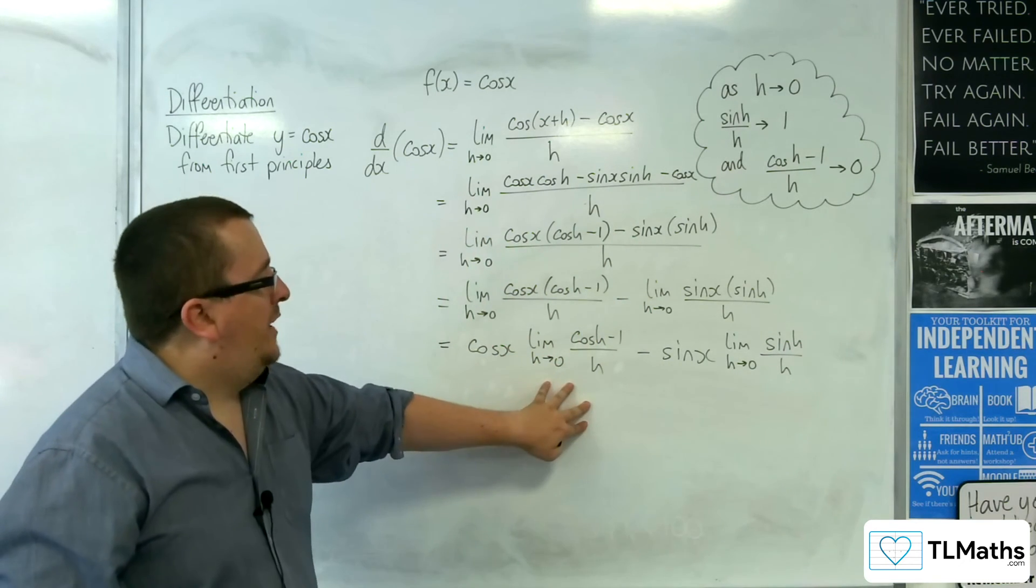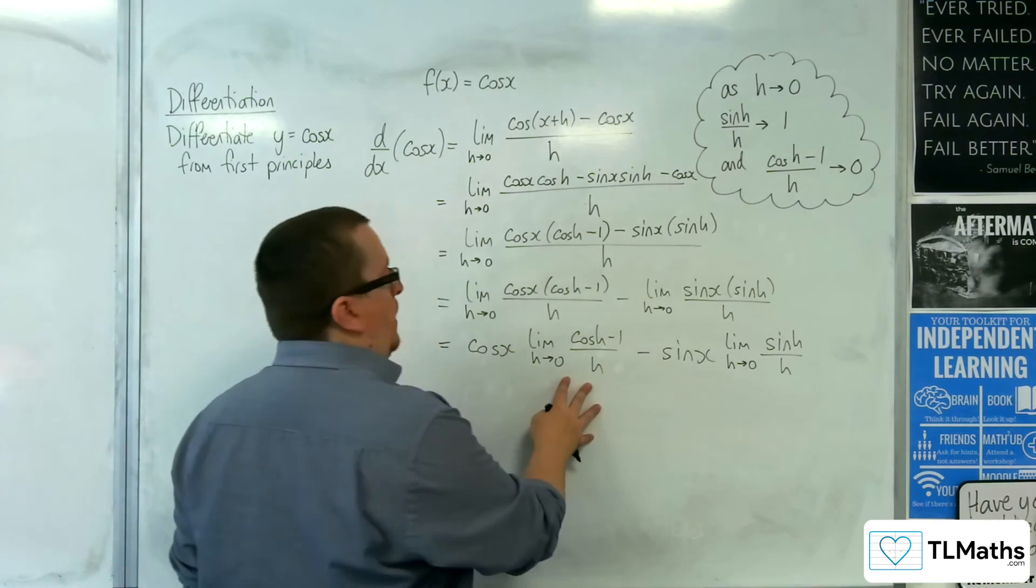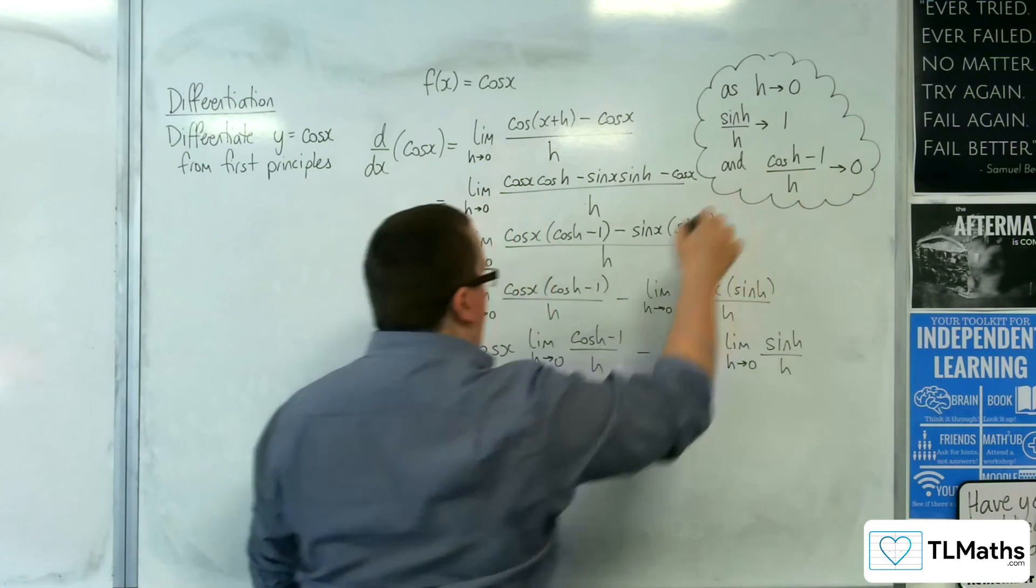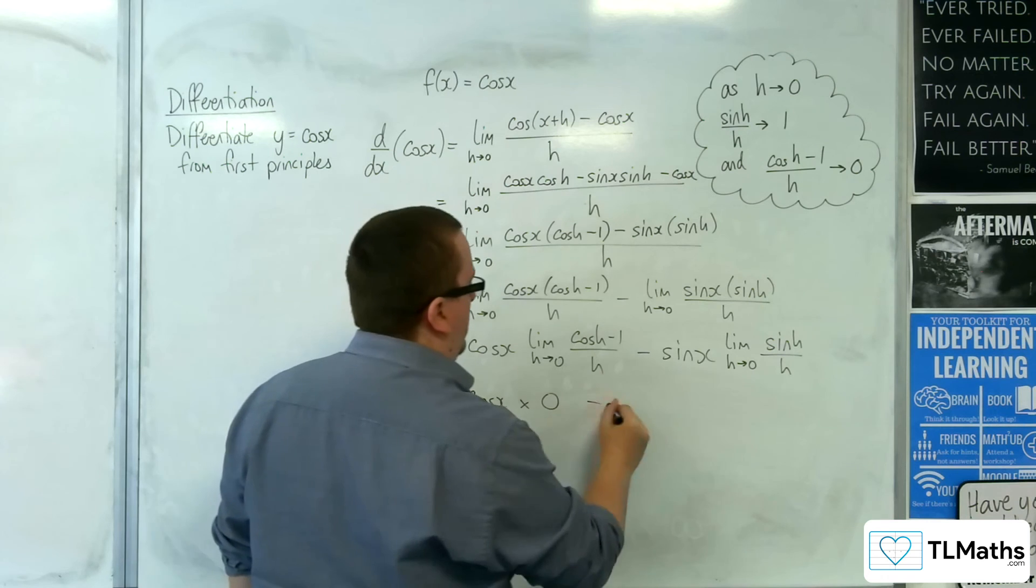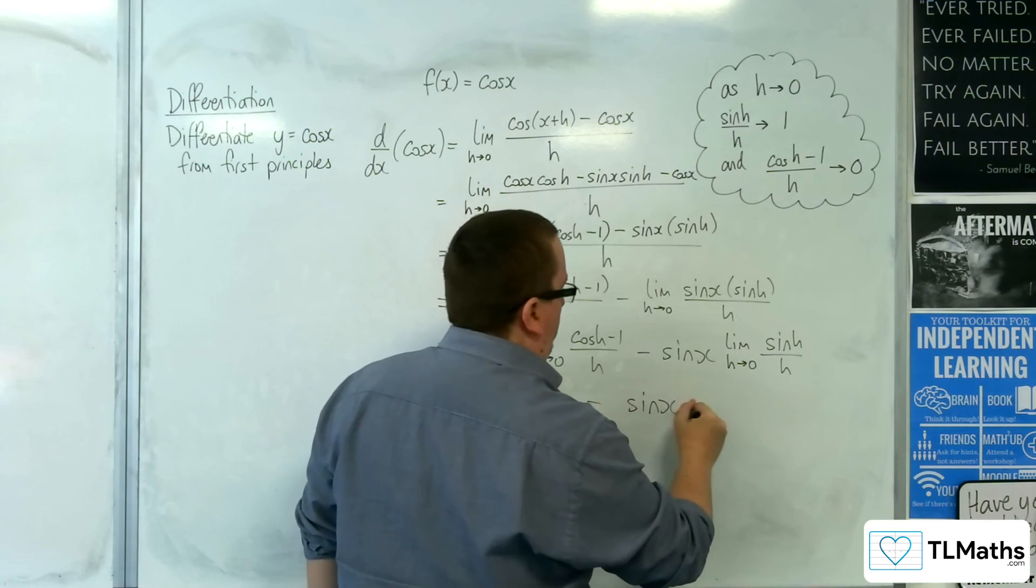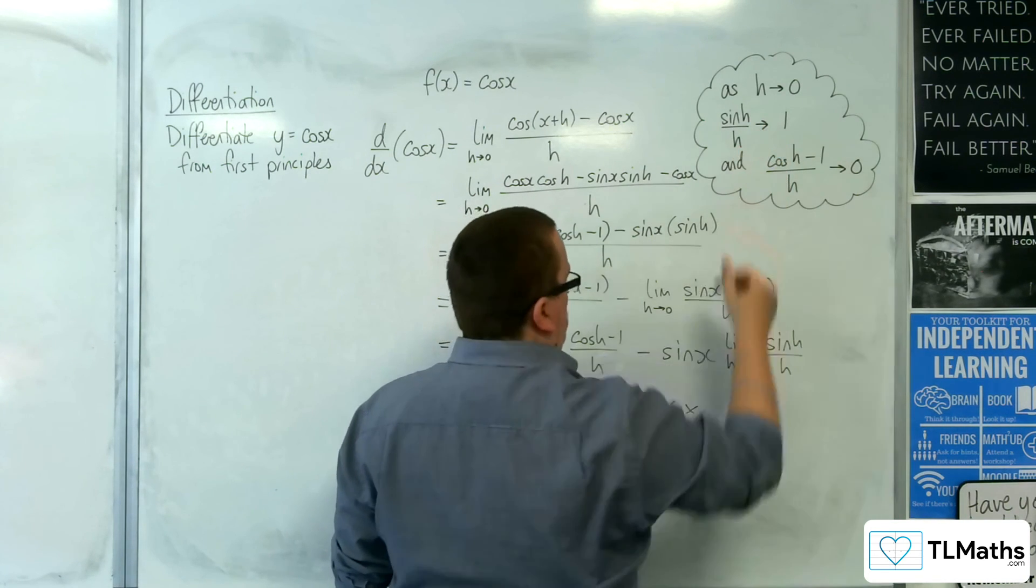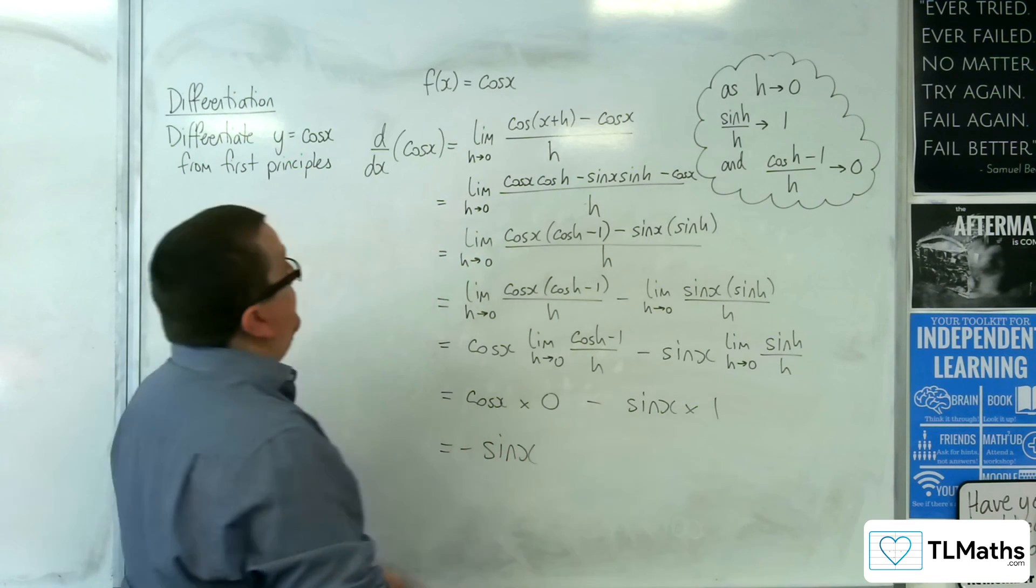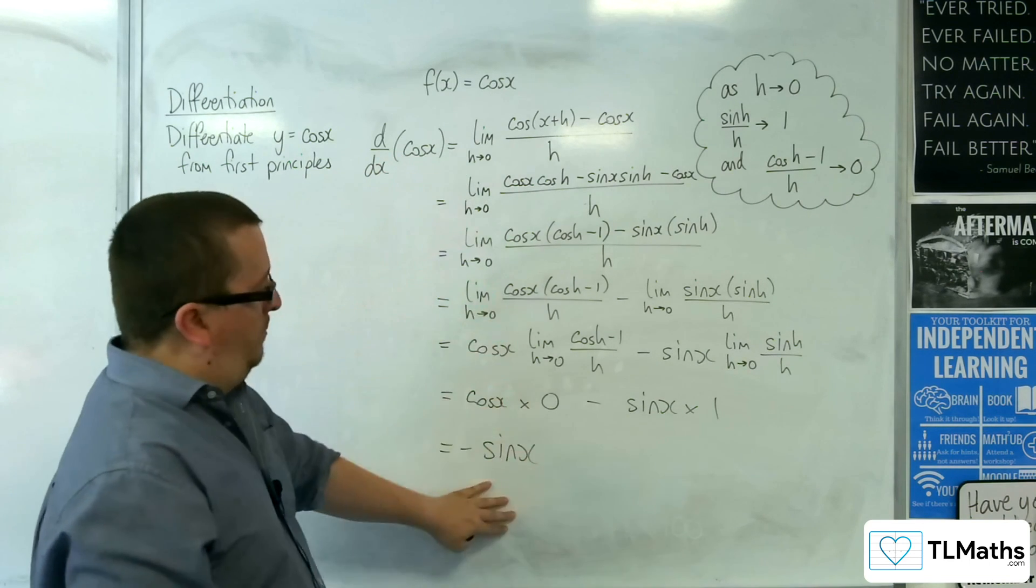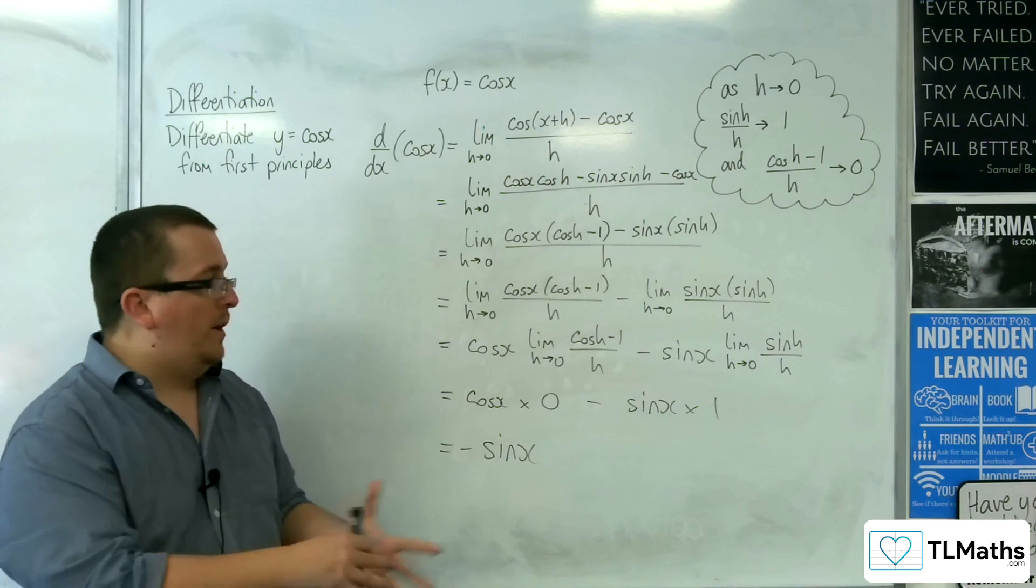So the limit as h tends to 0 of cosine h take away one over h, we know up here is 0. So we've got cosine x times 0 there. And we've got the sine x times by, well, sine h over h is just 1.